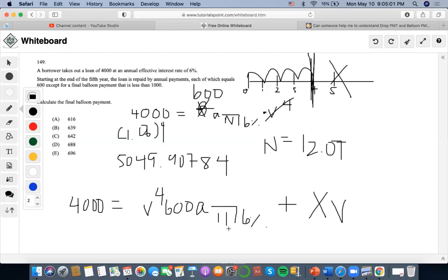And one more balloon payment that will be occurring at the next time period, which is at time 12. But this is also including the four years that are also deferred as well, so this becomes 16.